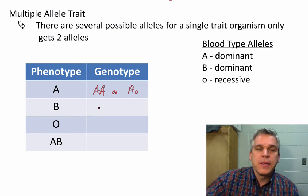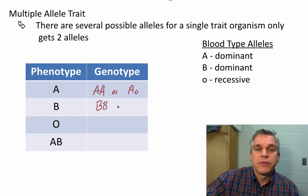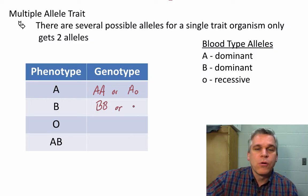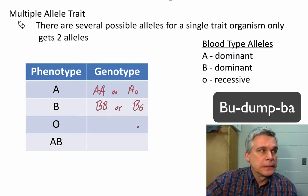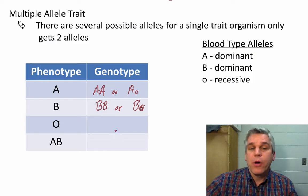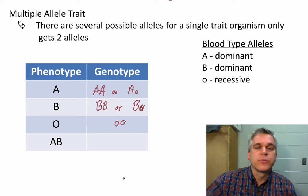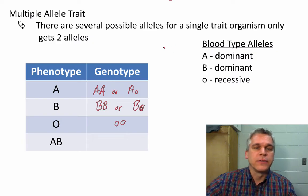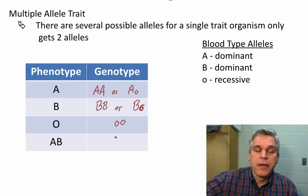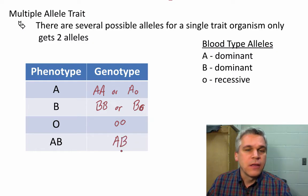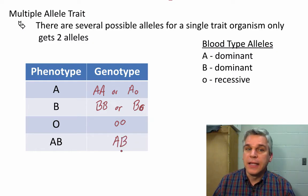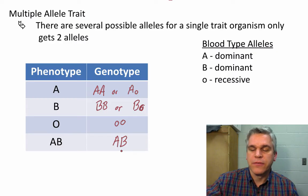If you have type B blood, you could have homozygous dominant BB, or you could have BO. If you have type O blood, we know what your genotype has to be — you're homozygous recessive with two O alleles. And if you're type AB blood, again we know what your genotype is: you would have the A and the B allele. So let's do some examples of this.